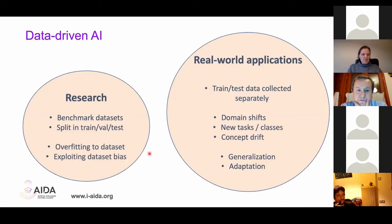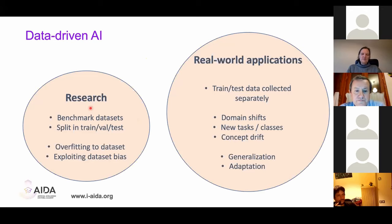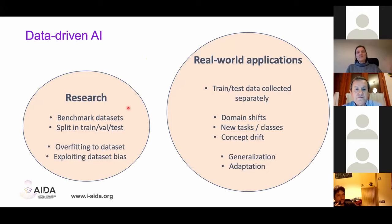We get a dichotomy where on one hand we have our research bubble, publishing papers using benchmark datasets in a perfect setting where all these assumptions are fulfilled. Nothing changes — we take the whole dataset, split it into training, validation, and test, so the test data and training data are sampled from the exact same distribution. In that setting we develop algorithms that reach state-of-the-art performance, sometimes even outperforming humans. But that doesn't necessarily translate to real-world applications.